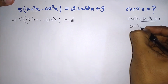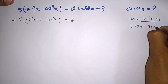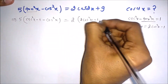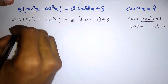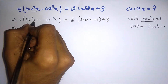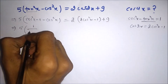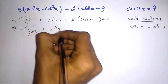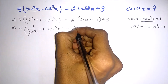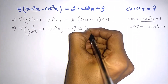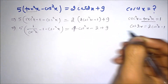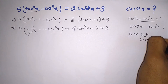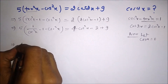We also know that cos2x = 2cos²x - 1, so we replace the right-hand side with 2cos²x - 1 + 9. We know that secx = 1/cosx, so we can write the equation as (1/cos²x) - 1 - cos²x = 4cos²x - 2 + 9, which simplifies to (1/cos²x) - 1 - cos²x = 4cos²x + 7.